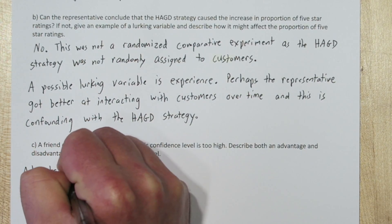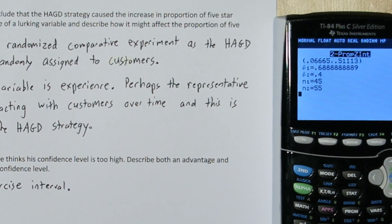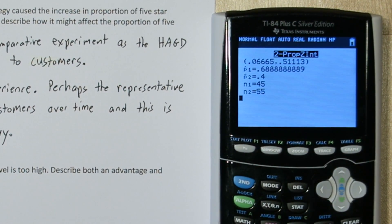One advantage to reducing the confidence is a more precise interval. So here's the output from our 98% confidence interval.